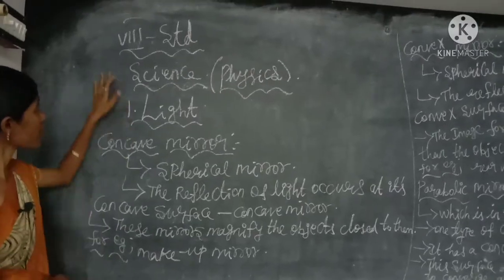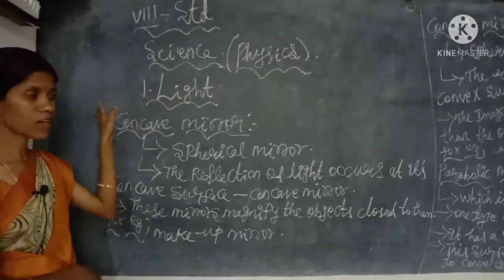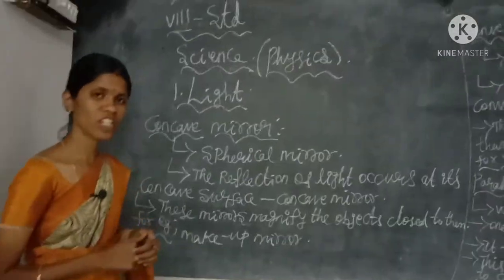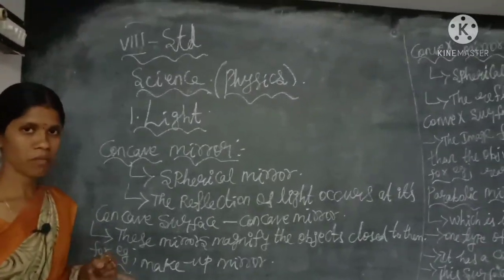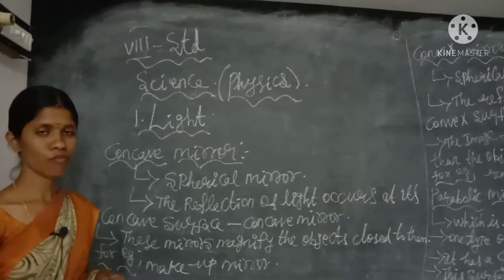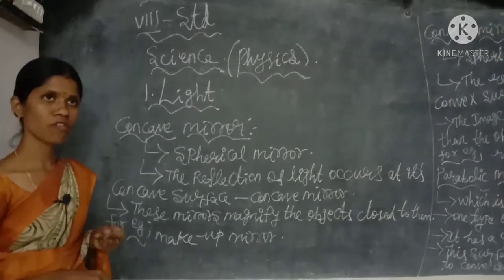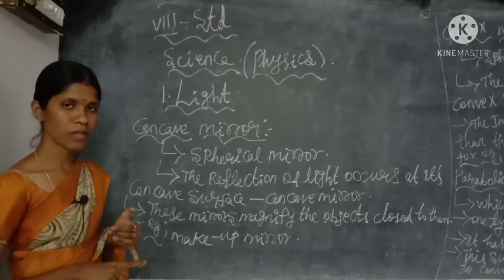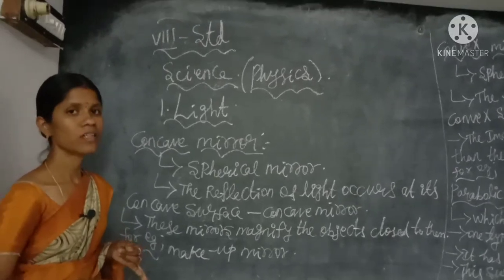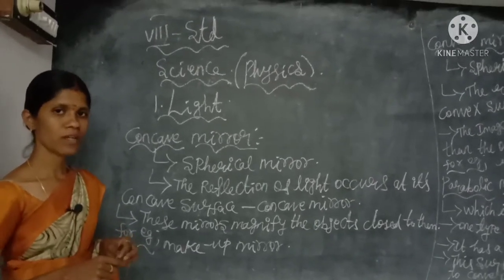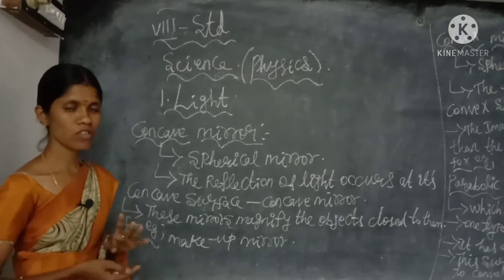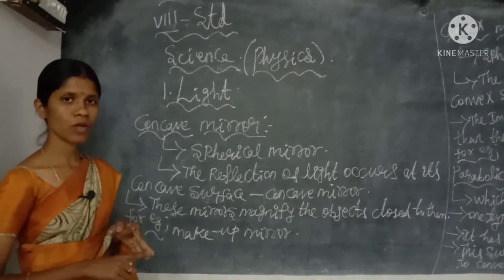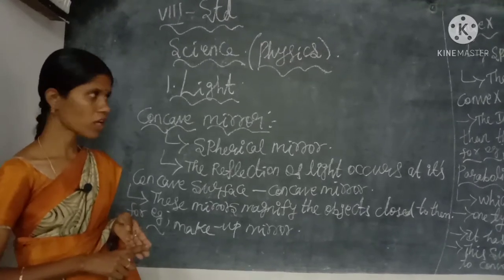Good morning students. This is the class for 8th standard science, physics. Our first lesson is light. In the last class we learned about the definition of light and mirrors, including the types of mirrors. Mirrors can be classified into two types: plane mirror and curved mirror. Curved mirrors can be further split into four types: spherical mirror, ellipsoid mirror, cylindrical mirror, and parabolic mirror.